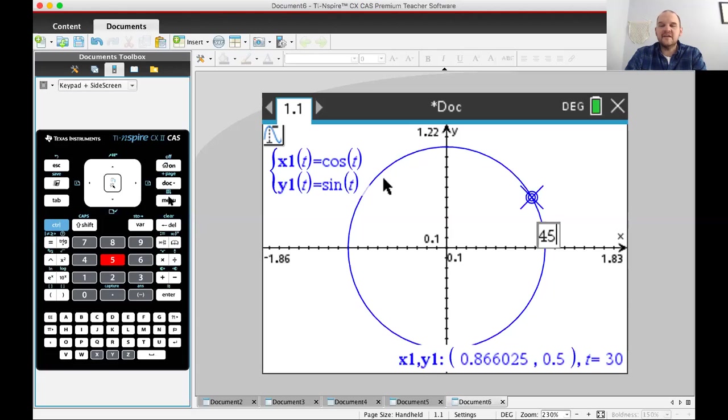I'm going to type in 45. What do I expect to get? I expect to get root two over two, root two over two. So do I know what root two is? Like 1.4 ish, right? So I expect to get like 0.7 ish, comma 0.7 ish, because it should be cosine sine. They're the same. And look at that, 0.707. Got it.